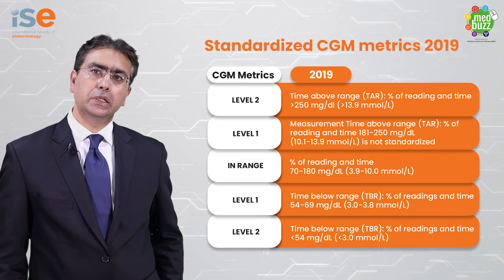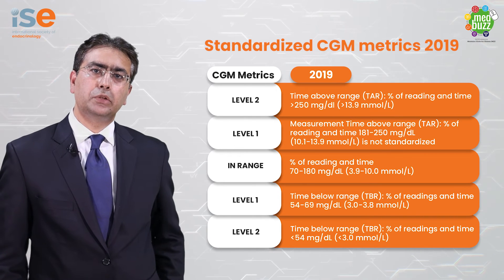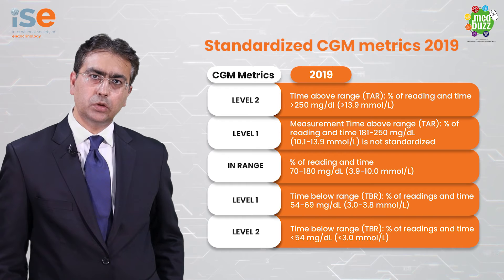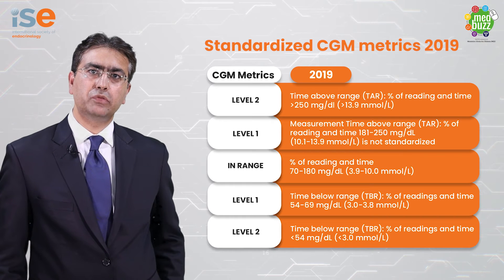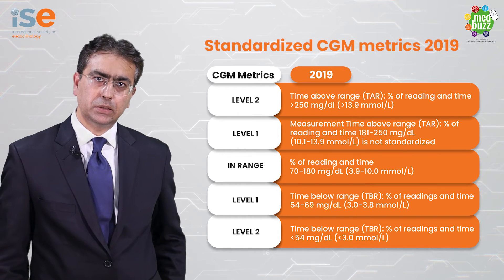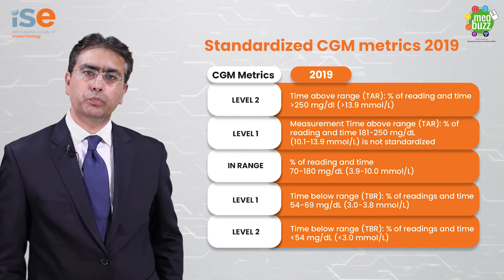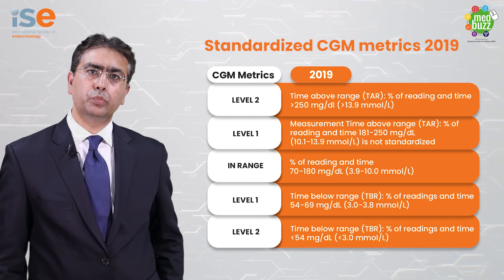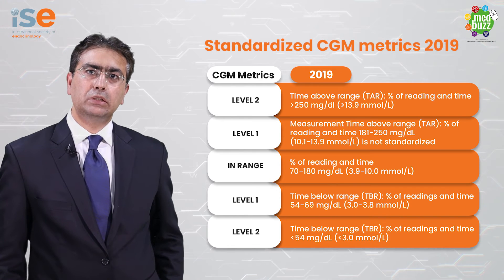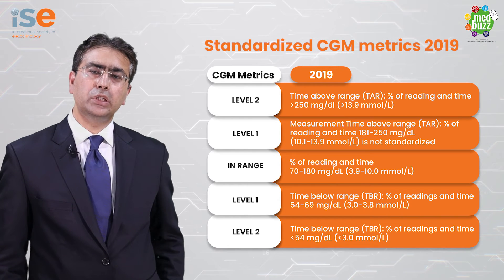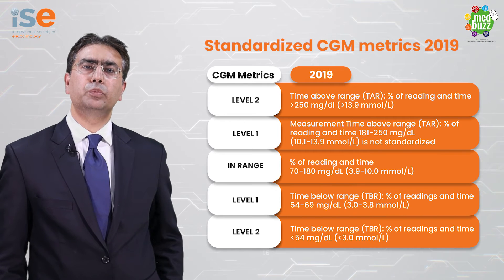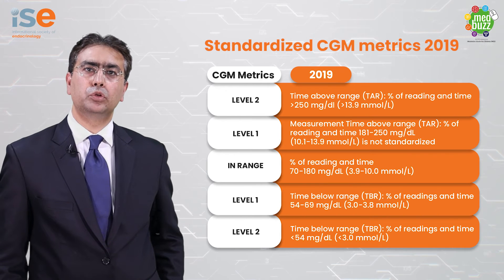Similarly, above target range is further divided into level 1 where the readings are between 181 to 250 mg per deciliter or 10.1 to 13.9 mmol per liter, and level 2 where the readings are more than 250 mg per deciliter or more than 13.9 mmol per liter.